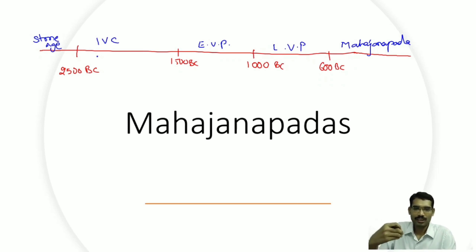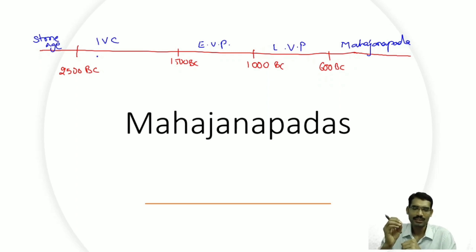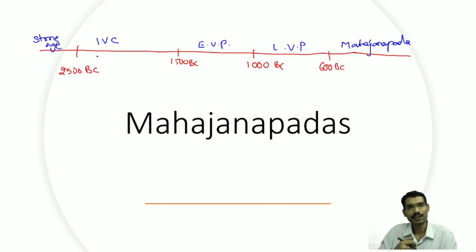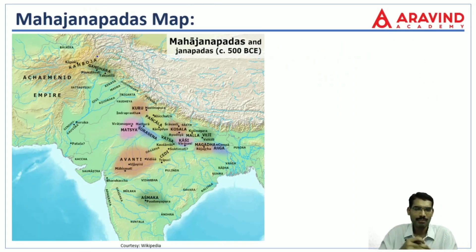From the examination point of view, Mahajanapadas is a very important topic. Questions are majorly asked about the capitals of these kingdoms. For example, Magadha is a Mahajanapada — questions can be asked on its capital Rajagriha, or about its other capital Pataliputra, or about who laid the foundations for Pataliputra. Let us now look at the map of the Mahajanapadas.